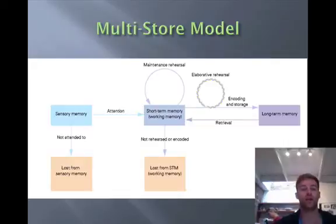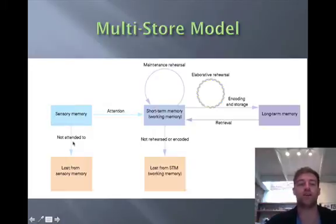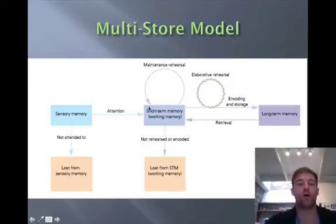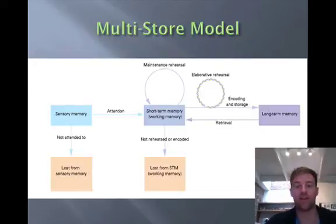In summary, the multi-store model has three sections: sensory memory, short-term memory, and long-term memory. If we do not attend to something in sensory memory, we lose it. If we do attend to it, it goes into short-term or working memory. If we don't rehearse it, it drops out. If we do rehearse it, maintenance rehearsal keeps it in short-term memory, while elaborative rehearsal encodes it into long-term memory. Information in long-term memory can also be retrieved forward into working memory.